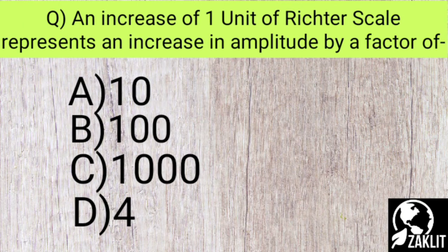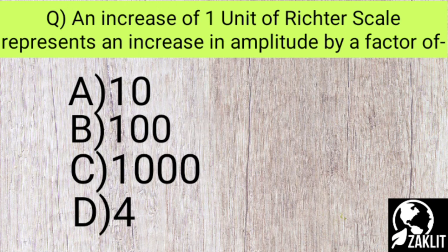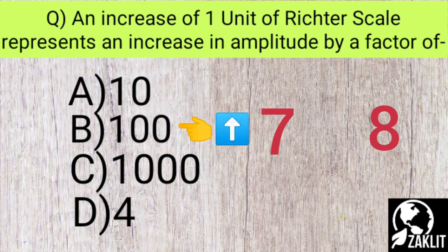The next question is: an increase of one unit on the Richter scale represents an increase in amplitude by a factor of what? The Richter scale is used to measure the intensity of earthquakes. The correct option is option B — 100. For example, if one earthquake measures 7 and the next measures 8 on the Richter scale, that one-unit increase means the amplitude is 100 times greater.